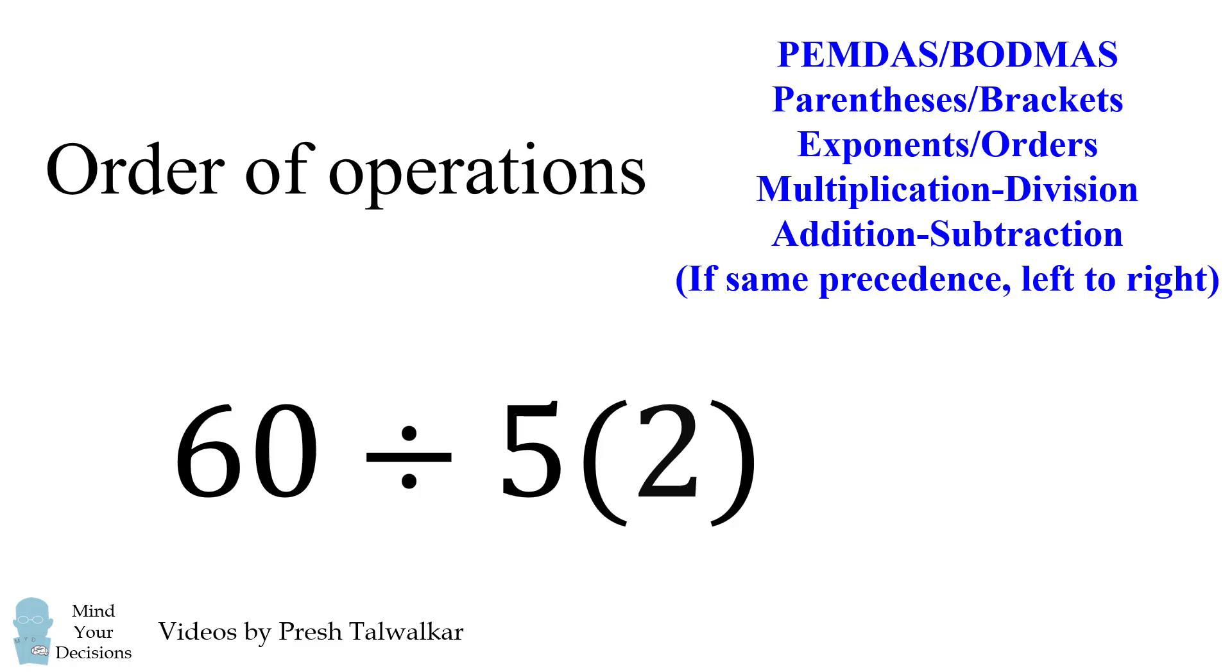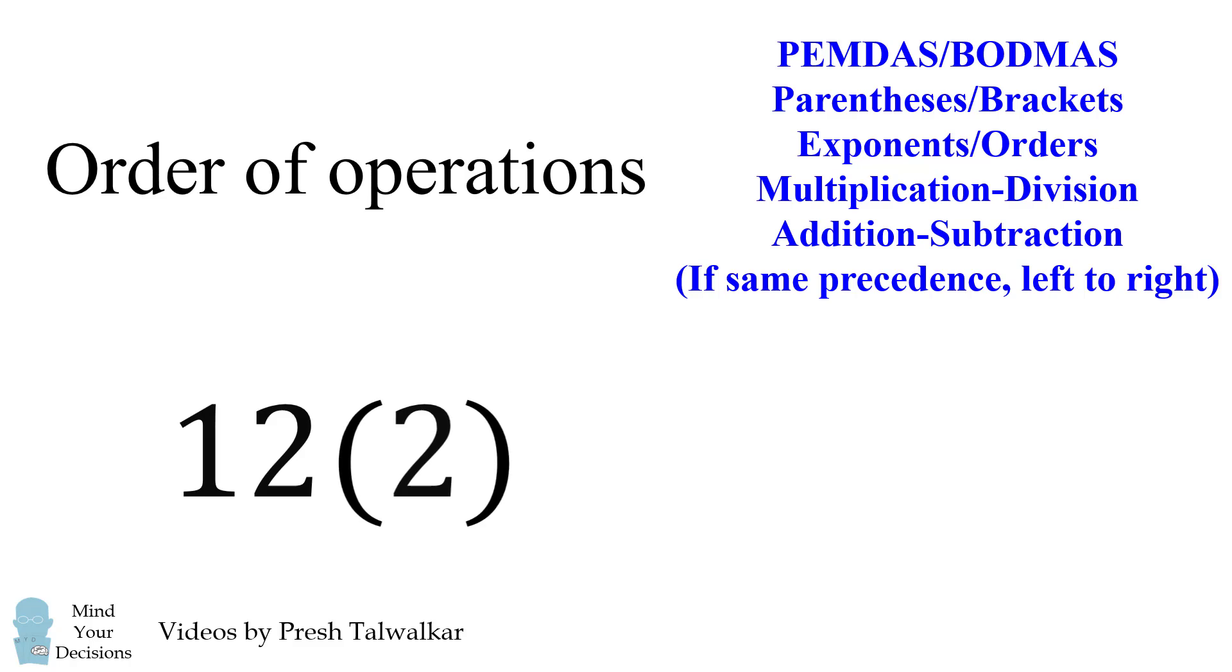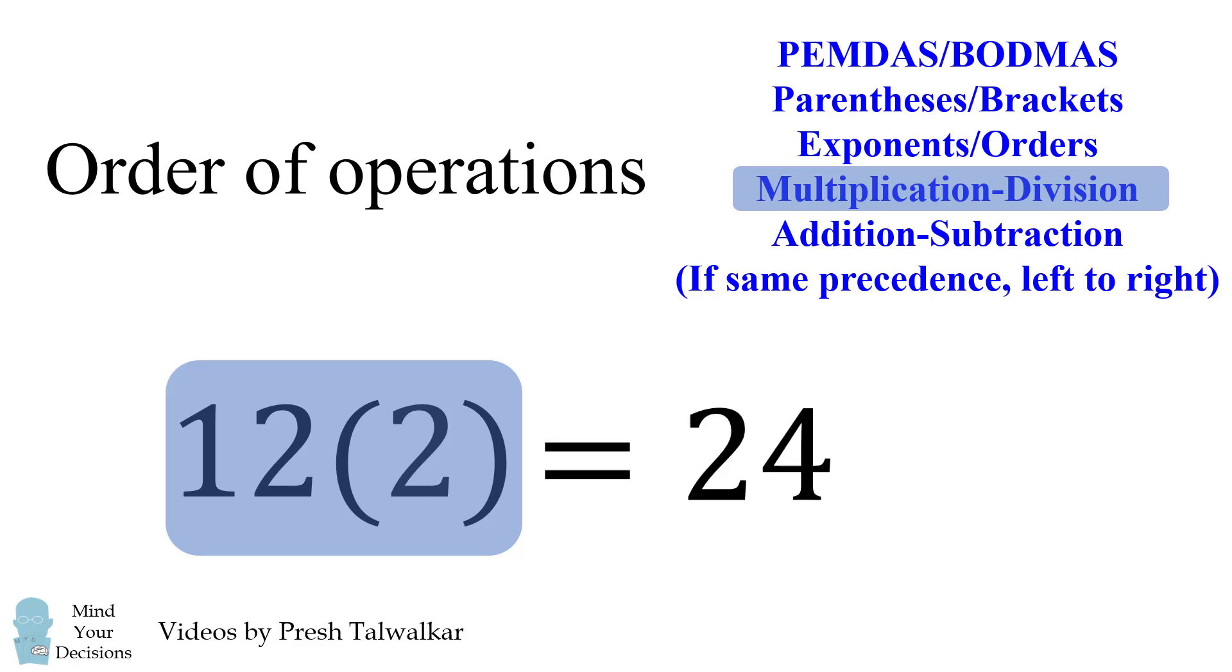The argument is about what to do next. According to the order of operations, we should evaluate multiplication and division with equal precedence going from left to right. Therefore, we should evaluate 60 divided by 5 first. This will be equal to 12. Finally, we evaluate 12 times 2, and that gives us the correct answer of 24. This is without a doubt the correct answer according to the modern interpretation of the order of operations.